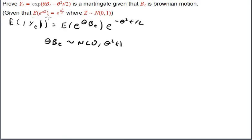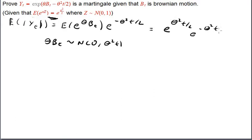From this, we have that this equals e to the θ²t over 2 times e to the minus θ²t over 2, which is 1 — as expected. Since this is Brownian motion, the expected value is 0, so e to that is 1.